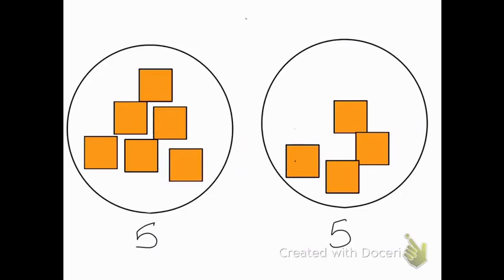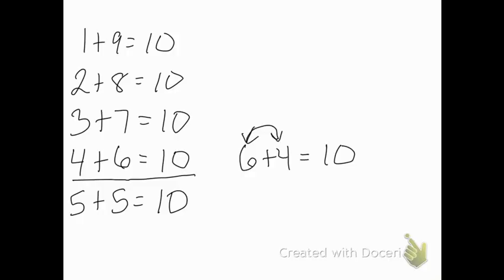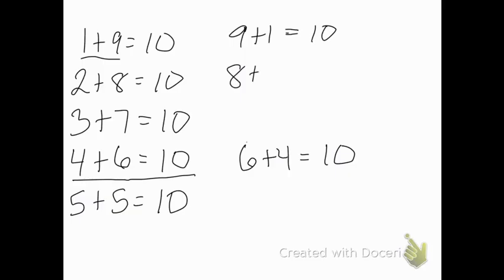So we're going to continue this. If you know six and four equals 10, then when we do combinations of 100 in our live session today, you're going to know that 60 plus 40 equals 100, or using the commutative property, 40 plus 60 equals 100. So four plus six equals 10, six plus four equals 10, 40 plus 60 equals 100, 60 plus 40 equals 100.